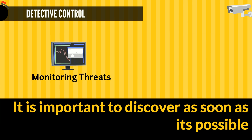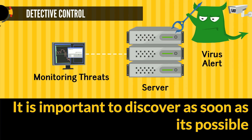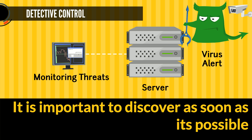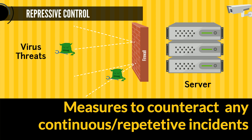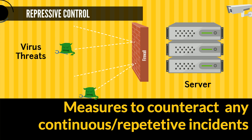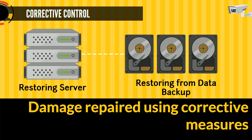It is always important to discover the threat as soon as possible. Enabling monitoring to detect threats and anti-virus software monitoring virus alerts are examples of detection controls. A counteractive measure for repeat incidents could be an account getting locked after incorrect password attempts, or a debit card blocked after entering an incorrect PIN. Corrective measures involve repairing the damage — for example, restoring data from backup once lost, or performing a fall back or roll back.